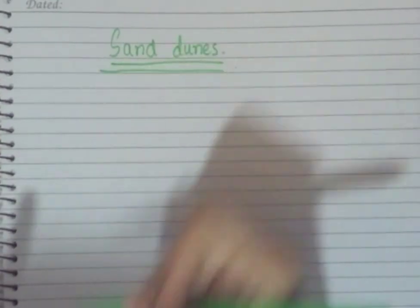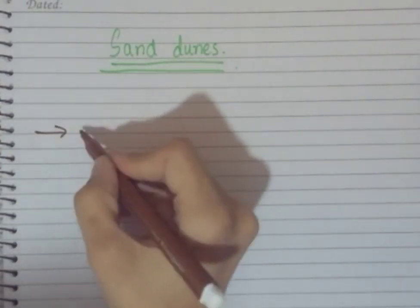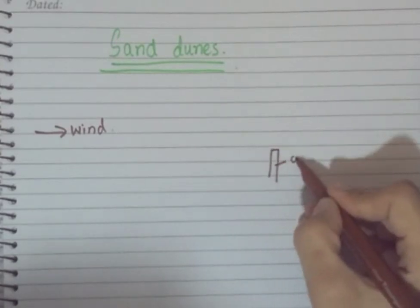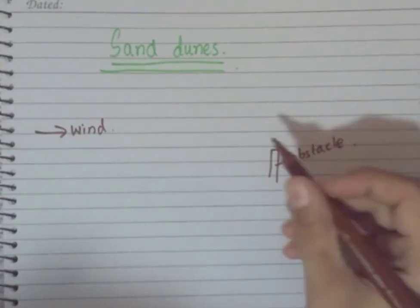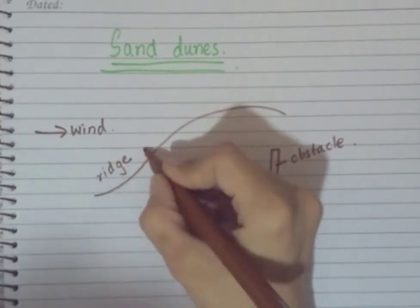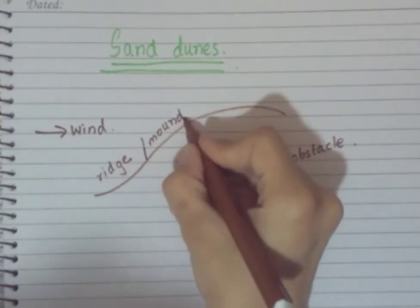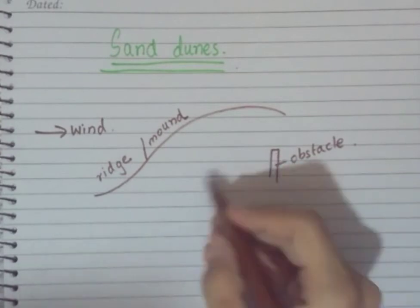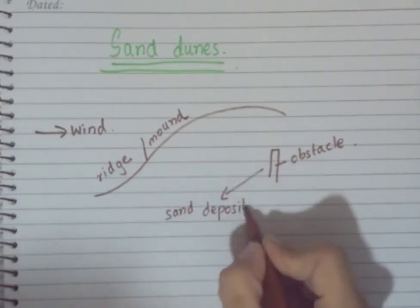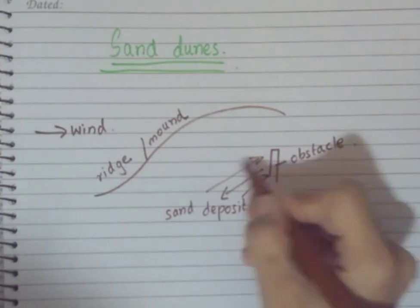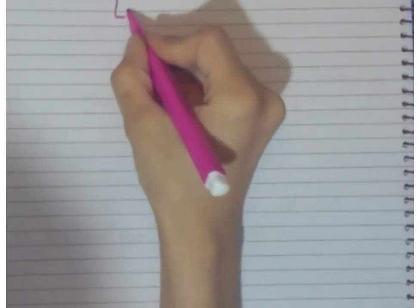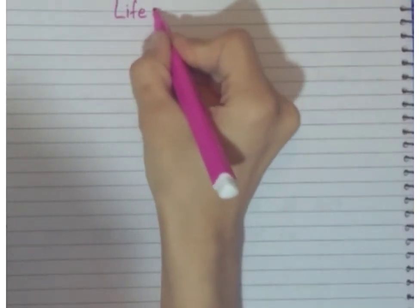Now, what are sand dunes? Whenever winds blow in a desert and face an obstacle or obstruction, they carry a lot of sand with them. They start depositing that sand on the windward side — not on the slip side, which is the other side. By depositing sand on the windward side, they create a ridge or mound-like structure called a sand dune.